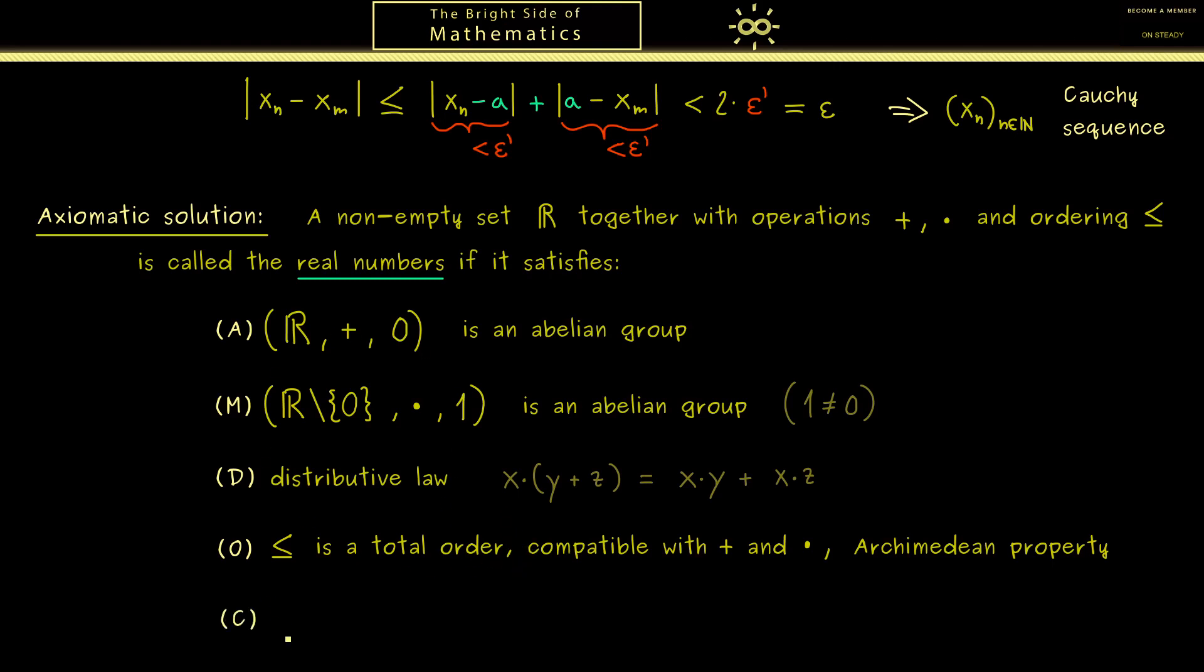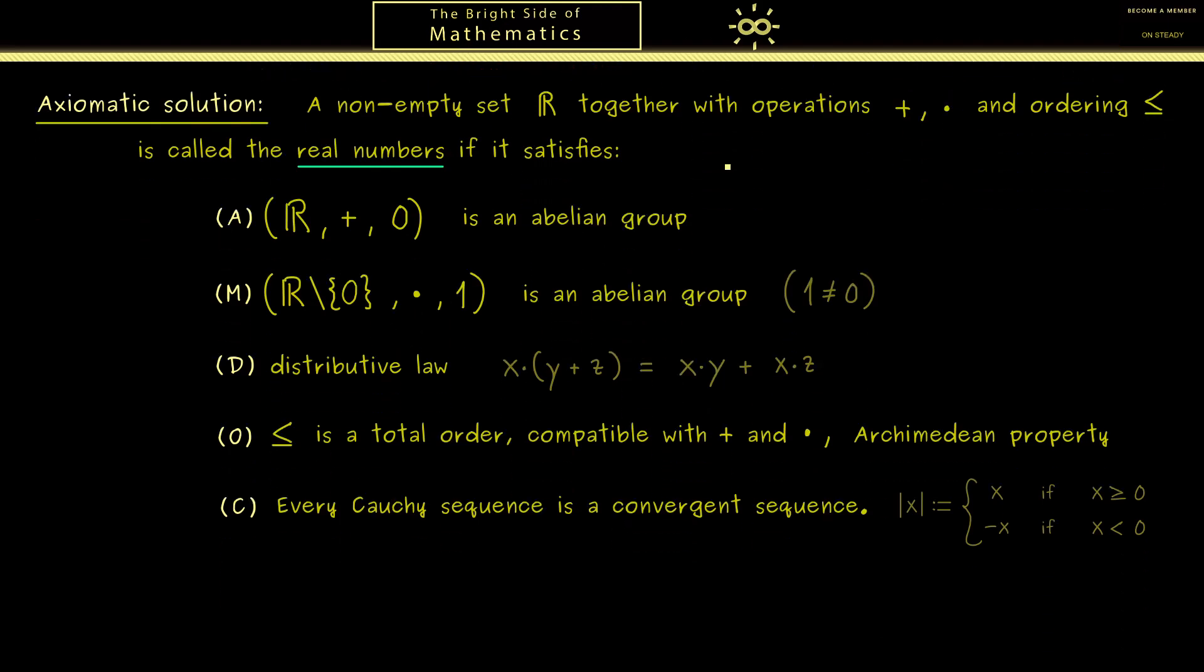But of course you have waited for this: the last axiom we call the completeness axiom. There we just state that every Cauchy sequence is also a convergent sequence. And of course the distance is measured with the absolute value which is defined as for the rational numbers. And with this you have all the axioms of the real numbers.